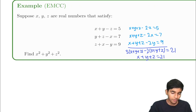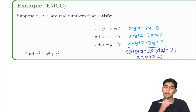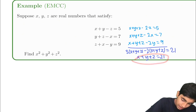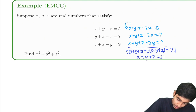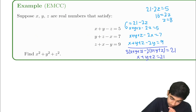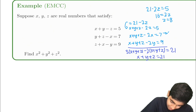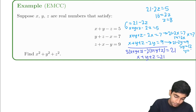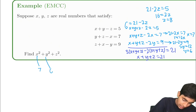But how can we use this to solve for x, y, and z? Since x plus y plus z is 21, the first equation becomes 21 minus 2z equals 5, so z equals 8. Similarly, 21 minus 2x equals 7, so x equals 7. And 21 minus 2y equals 9, so y equals 6.